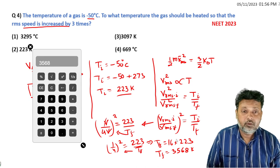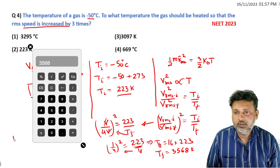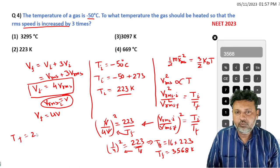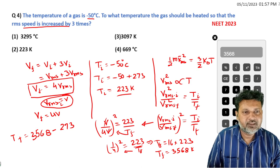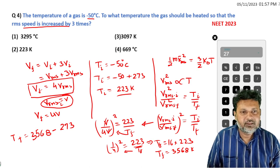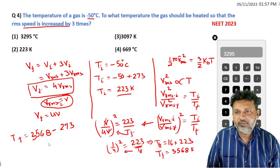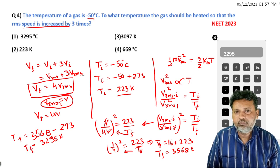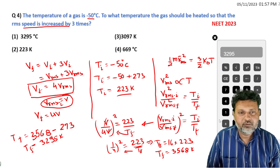3568 Kelvin. This is in Kelvin. Should we convert to degree Celsius? T_final is 3295 Kelvin. Actually, the answer is degree Celsius, so we need to convert. The correct option is 3295 degrees Celsius.